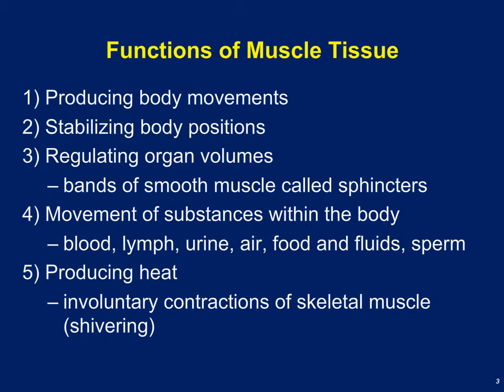Muscle is also responsible for regulating the volumes of hollow organs. Here we're talking about smooth muscle — both the bladder and the large and small intestines have a layer of smooth muscle around them that helps propel substances through these organs. The other thing muscle tissue does is produce heat. When we're cold, one mechanism for restoring homeostasis is to initiate contraction of skeletal muscle, generating heat to bring us back to our thermostasis set point.